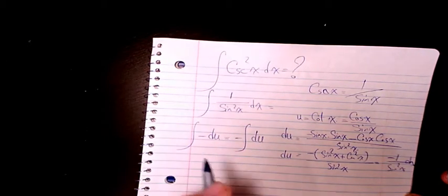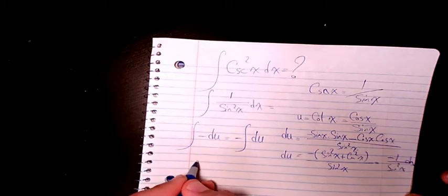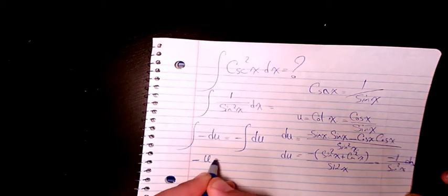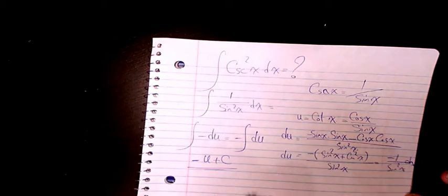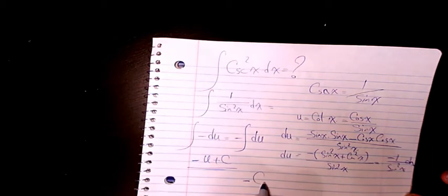Negative integration of du. So integration of du is just u, so it's going to be negative u plus a constant. And what is u? u is cotangent x, so it's going to be negative cotangent x plus C.